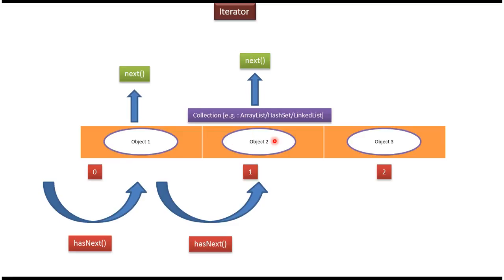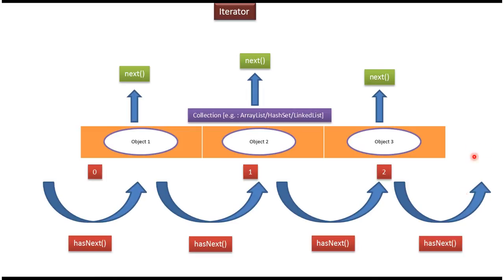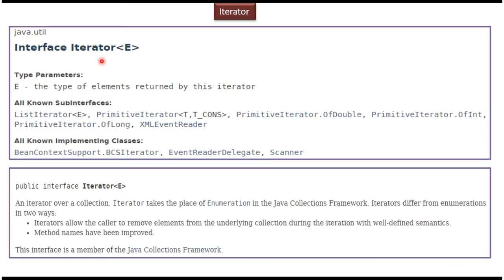If you want to get object three, again call hasNext and it will return true, and using next method we can get object three. And again if you call hasNext and there is no element, it will return false.